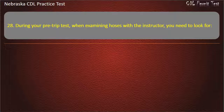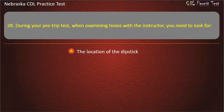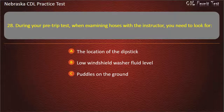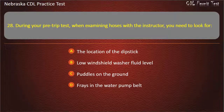Question 28. During your pre-trip test, when examining hoses with the instructor, you need to look for: the location of the dipstick, low windshield washer fluid level, puddles on the ground, frays in the water pump belt. Answer: Puddles on the ground.